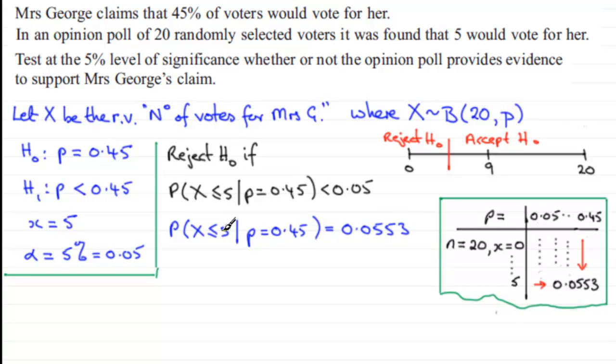How does this compare with our 5%? We were saying reject the null hypothesis if this probability was less than 0.05. This value here, 0.0553, is greater than 0.05, so that's telling us that 5 as a value must be on the acceptable side of this line.